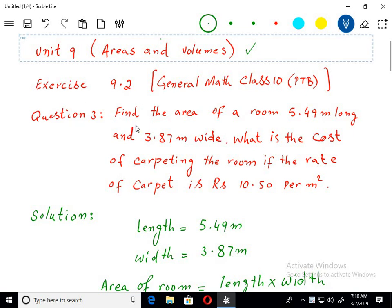Question number 3: Find the area of a room 5.49 meters long and 3.87 meters wide. What is the cost of carpeting the room if the rate of carpet is rupees 10.50 per meter square?